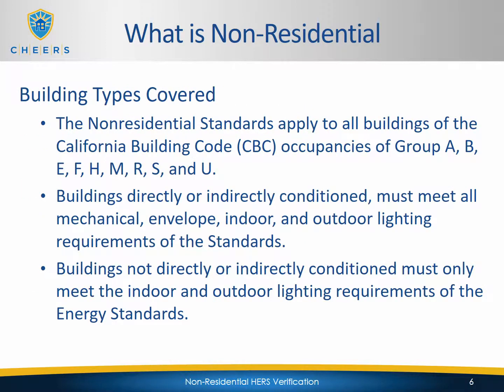What is considered non-residential? The California Building Code has different building types considered different occupancy groups, lettered as groups A, B, E, F, H, M, R, S, and U. For buildings that are directly or indirectly conditioned, they must meet all the mechanical, envelope, indoor and outdoor lighting requirements of those standards. Buildings that are not directly or indirectly conditioned only need to meet the indoor and outdoor lighting requirements.